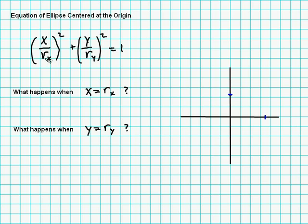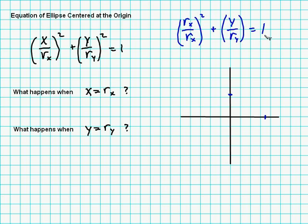Let's verify this. If x equals r sub x, then we have r sub x over r sub x squared, which equals one. Then we have y over r sub y squared equals one. But that whole first term is already one, so subtracting one from both sides gives us the y term equals zero. Multiplying through by r sub y gives y equals zero. So when x equals r sub x, y equals zero. And when x equals minus r sub x, it's also zero because the square makes it one again — so it hits those two points.